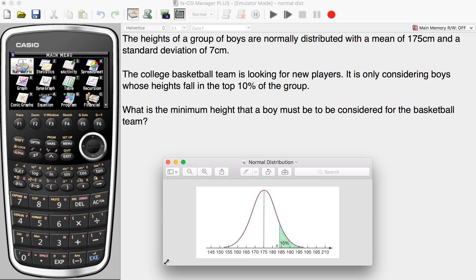You can see here at the bottom we have a graph displaying the information, so 175 is the mean, that's where the bell curve peaks, and the top 10% we're looking at is this right hand green area here. So we're looking at what x value or what height, the minimum height must be, and then any of these values within here will be accepted for the boys basketball team.